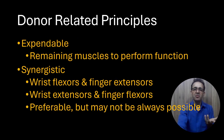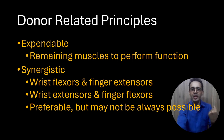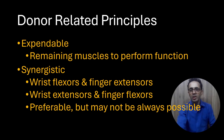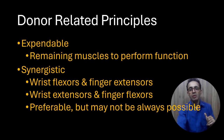Another donor-related principle is using an expendable MTU. By expendable, we mean that when using a particular donor, sufficient remaining muscles should still be able to adequately perform the transferred tendon's original function. For example, if we use FCR, FCU is still there to continue the function. It does no good to restore a given movement if another equally important movement is lost in the process.